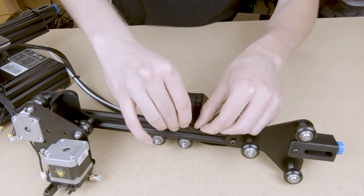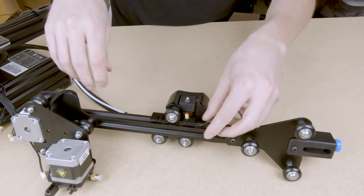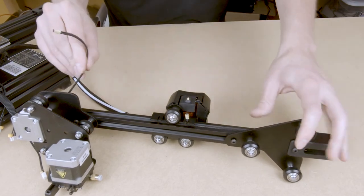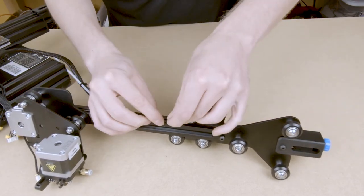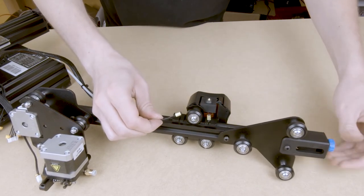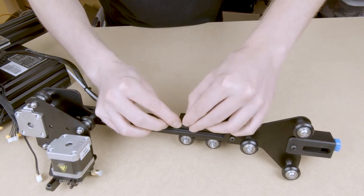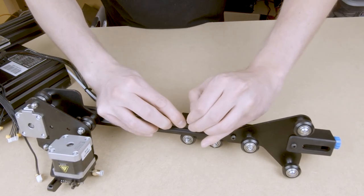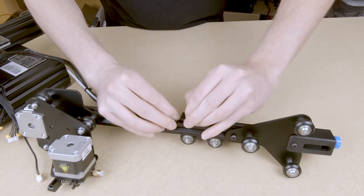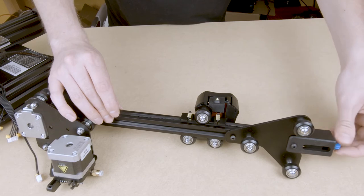And just tighten these up. Then we're going to slide the belt into these slots on the bottom of the extruder. If you need a little slack, you can loosen that up. And snug it back up.